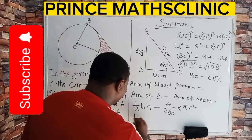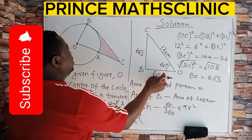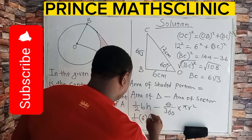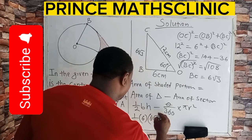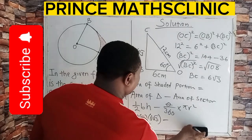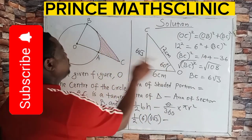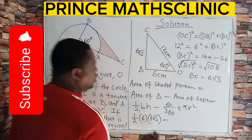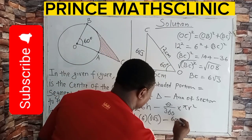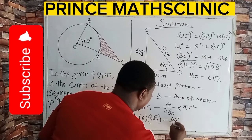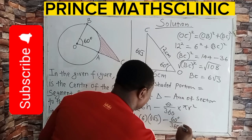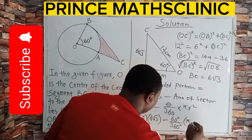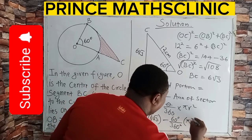So using that formula, half, the base here is 6, the height is 6 root 3. Then minus our theta, as we found to be 60, because that is the angle O. So this is 60 degrees over 360 degrees times pi. I will leave it in terms of pi. Then our radius.